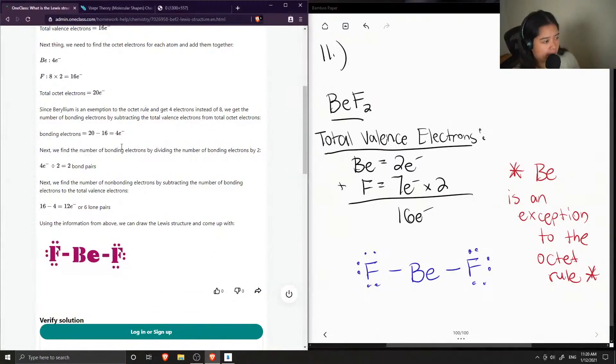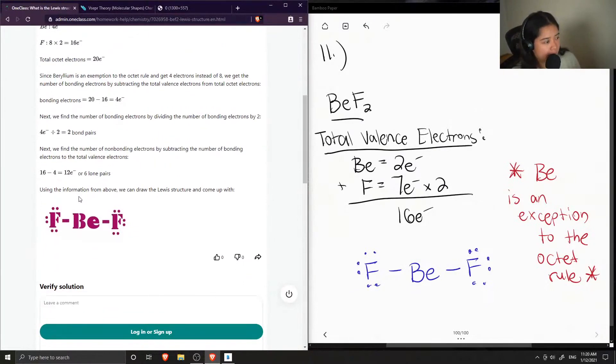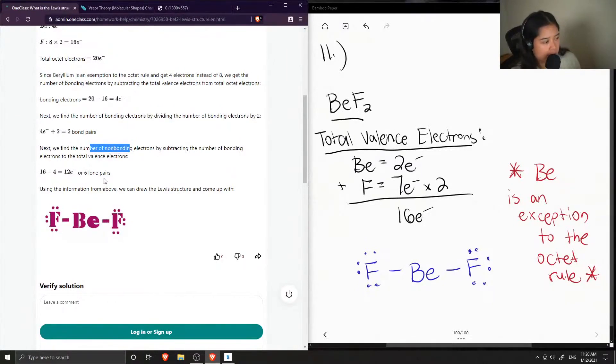Next, we find the number of bond pairs by dividing the number of bonding electrons by two. I think they mean the number of bond pairs. But anyways, next we find the number of non-bonding electrons by subtracting the number of bonding electrons from the total valence electrons. 16 minus 4 is 12, or six lone pairs.